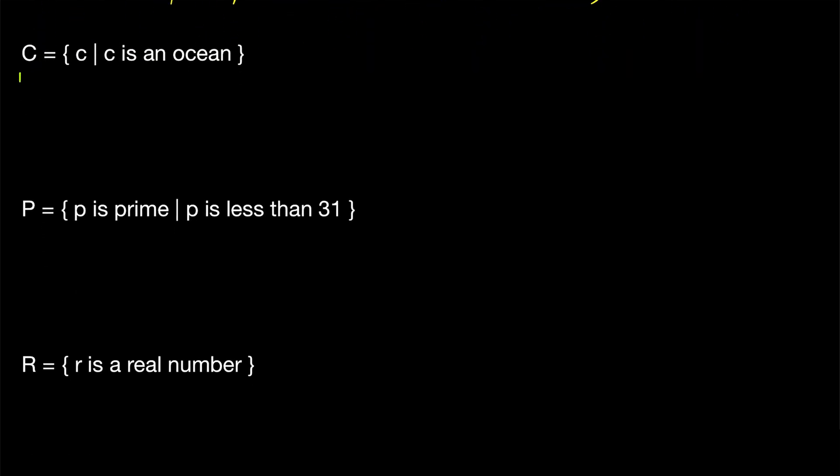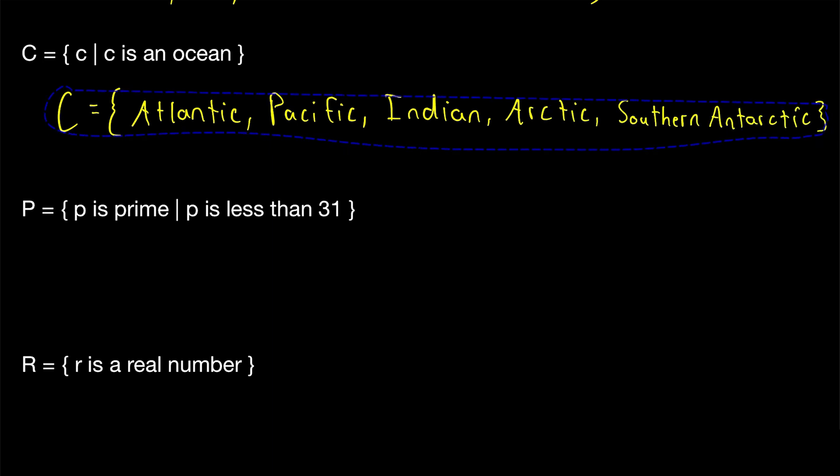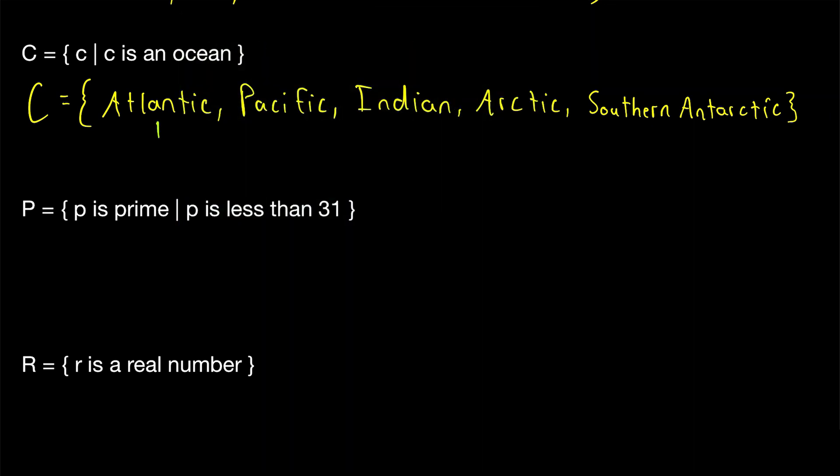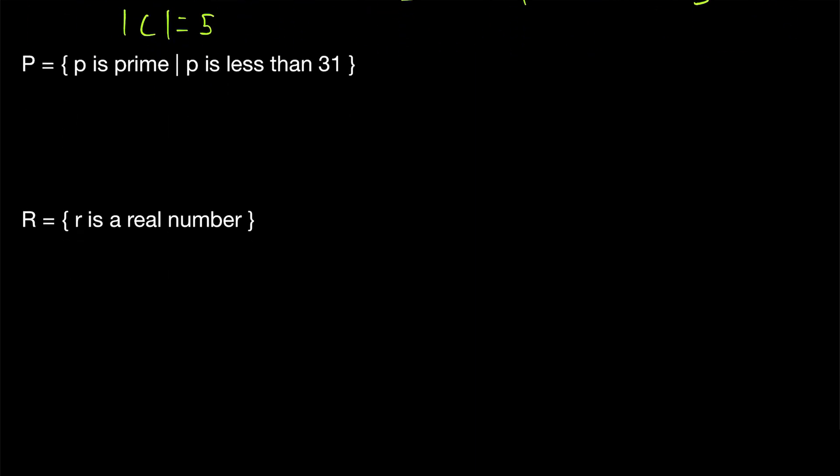What do we got next? We've got a set C. This just contains all elements c such that c is an ocean. Now, this definition isn't super good or specific because it depends how we classify the oceans. But a very common way of separating them is into the Atlantic, Pacific, Indian, Arctic, and Southern Antarctic oceans. So those are the names of our oceans. How many are there? If we count them up, one, two, three, four, five. So the cardinality of C containing the names of the oceans is equal to five. Again, it's just the number of elements that the set contains.